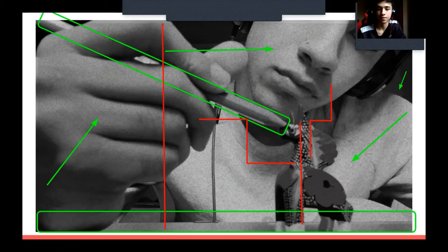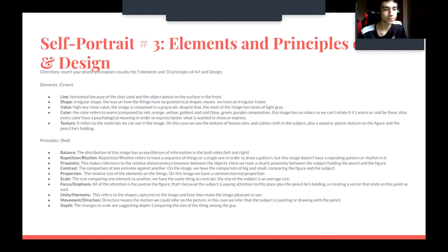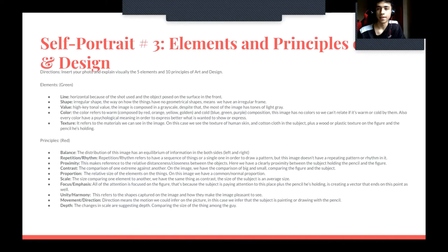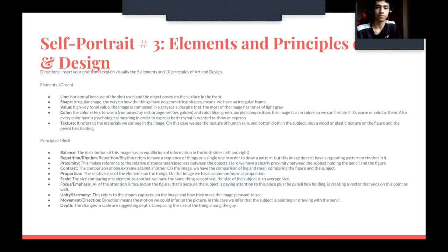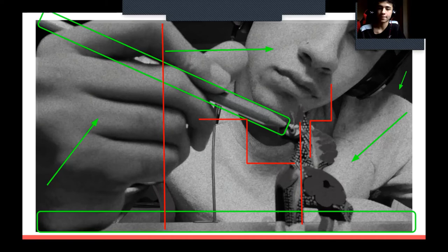We have a lot of light that lets us see what's in the image. The fourth element is color — warm colors are composed of reds, oranges, and yellows, while cool colors are blues, greens, and purples. However, there is no color in this image, so we can't determine if it's warm or cold. Every color has a psychological meaning to express what is intended, but because of the grayscale, we can't know exactly what color is present.